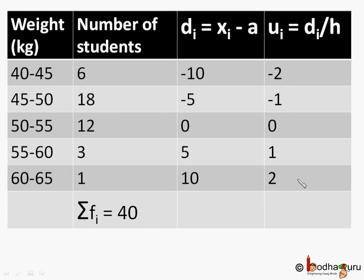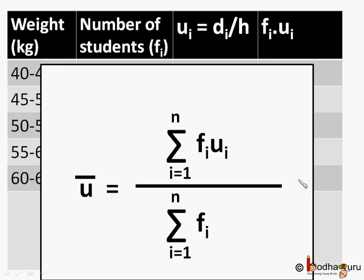So now we find the u bar, which is the mean of u. For that, we need to sum all fi into ui and divided by sum of fi.